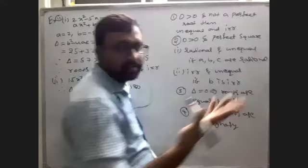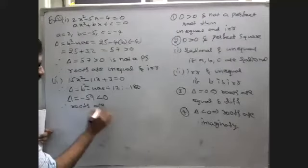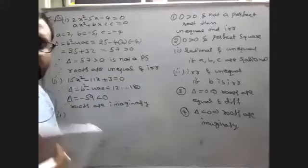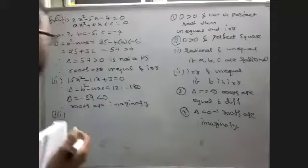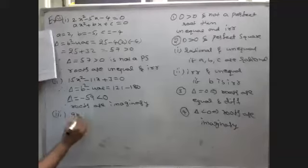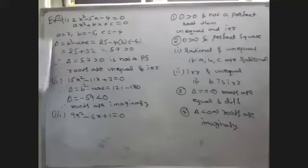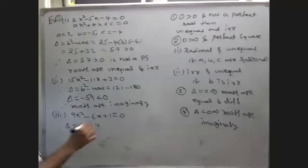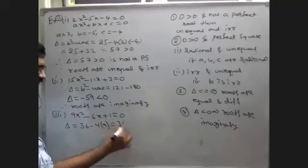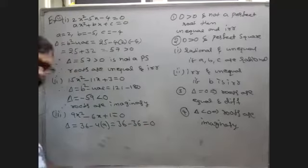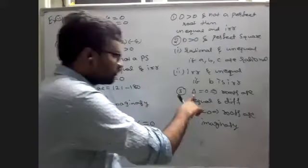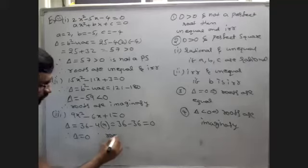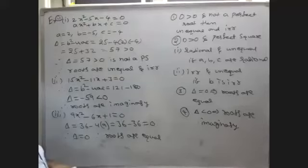Since delta is less than 0, the roots are imaginary. Third question: 9x² - 6x + 1 = 0, where a = 9, b = -6, c = 1. Delta = (-6)² - 4(9)(1) = 36 - 36 = 0. Therefore delta equals 0, so the roots are equal.